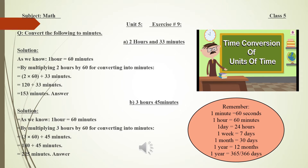Class, look at exercise number 9. The question is: convert the following hours to minutes. First, remember this table: one minute is equal to 60 seconds, one hour is equal to 60 minutes, one day is 24 hours, seven days is one week, 30 days is one month, 12 months is one year, and in one year we have 365 or 366 days.